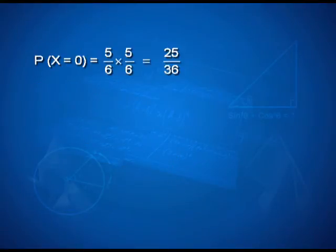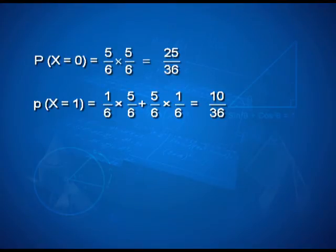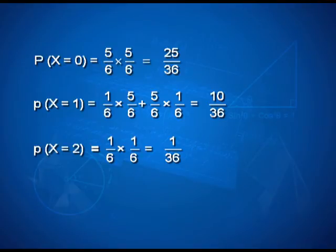The probability of getting a 6 in a single throw is 1/6; not getting a 6 is 5/6. So probability of x equal to 0 means not getting a 6 and not getting a 6, which is 5/6 × 5/6 = 25/36. Probability of x equal to 1: the first die shows a 6 and the second does not, or the first does not and the second does — so it is (1/6 × 5/6) + (5/6 × 1/6) = 10/36. Similarly we get probability of x equal to 2. Once I have these probabilities, we are ready to give the probability distribution as a table.